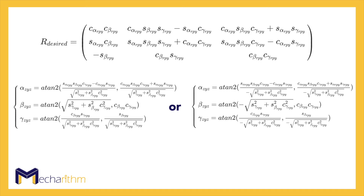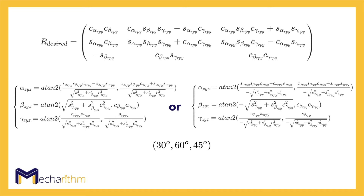As a numerical example, if the sensor measures the orientation of the remote control as Roll-Pitch-Yaw angles of 30 degrees, 60 degrees, and 45 degrees, then in order for the robotic hand to follow this orientation, the ZYZ Euler angles should be approximately 11 degrees, 64 degrees, and 16 degrees for the first set, and 168 degrees, minus 64 degrees, and minus 163 degrees for the second set. For your convenience, a MATLAB code to calculate the same result is available on our website.